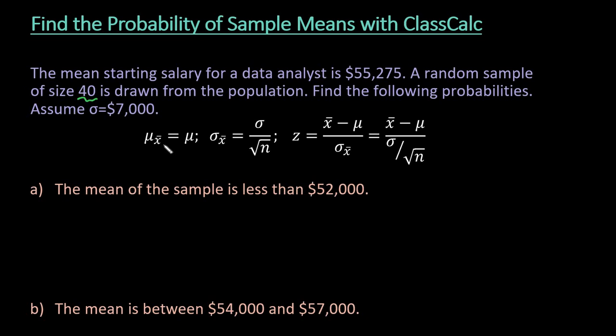So with this, if you were doing hand calculations, we're using the sampling distribution of the sample means which tells us that the mean of the sample means, so the average of all of the sample averages for that population, is equal to the mean of the original population. So since this is the mean of the original population, we would just use that value for our mean of our sampling distribution of our sample means. The standard deviation of the sample means is equal to the standard deviation of the original population, the 7,000, divided by the square root of the sample size. So we would divide that by the square root of 40, and that would be our standard deviation or standard error of our sampling distribution of the sample means.